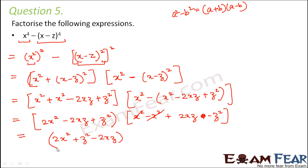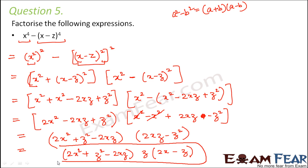So x square minus x square would be 0. So this becomes equal to 2x square plus z square minus 2xz into 2xz minus z square. So if you look at this term, here you have z in common. So this can further be written somewhat like this. Take out z in common. So this becomes 2xz minus z. So this is the final factor form and hence the final answer for this expression.